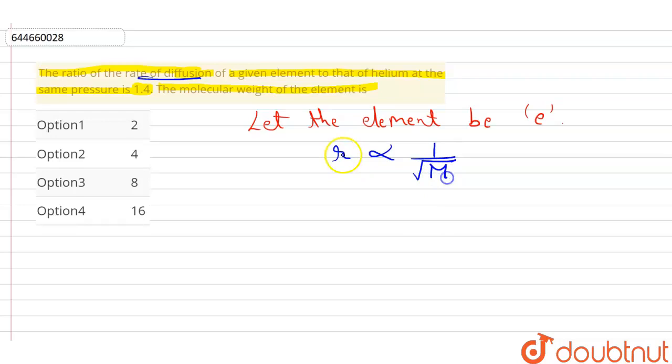So therefore according to this question, we can write it as r_e, that is ratio of diffusion of element e by ratio of diffusion of element H, is equals to square root of molar mass of helium by molar mass of element e.